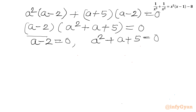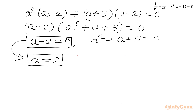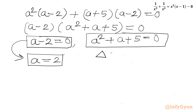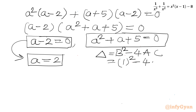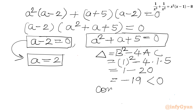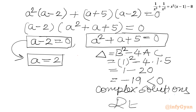From the first factor, A minus 2 equals 0, so A equals 2. For the quadratic factor A squared plus A plus 5, we evaluate the discriminant: B squared minus 4AC equals 1 squared minus 4 times 1 times 5, which is 1 minus 20, giving negative 19. Since the discriminant is negative, the quadratic gives only complex solutions, so we reject it for real solutions.